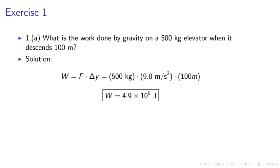Solution. W equals F delta. The force is mg, which is 500 kg times 9.8 m per second squared times 100 m, which gives us a work of 4.9 times 10 to the 5th Joules.